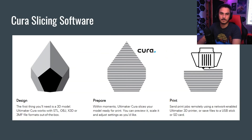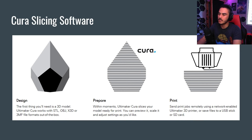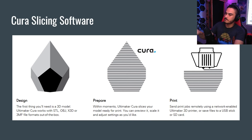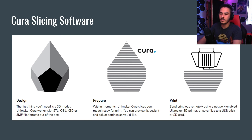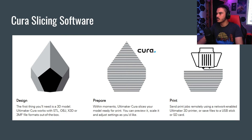Cura is the slicing software that we use. It's free, it's easy to use, and it's quite simple. So after you have your design, you can use Cura to prepare it and then slice it into G-code.